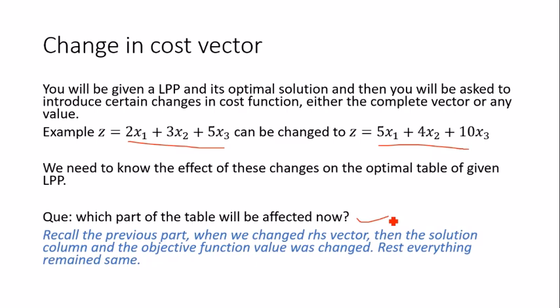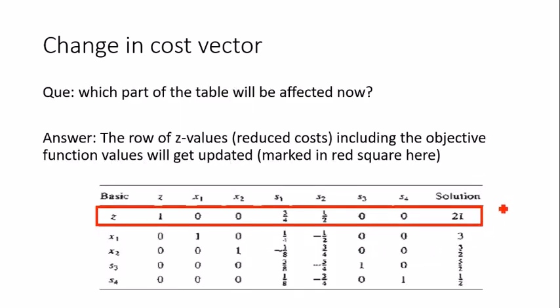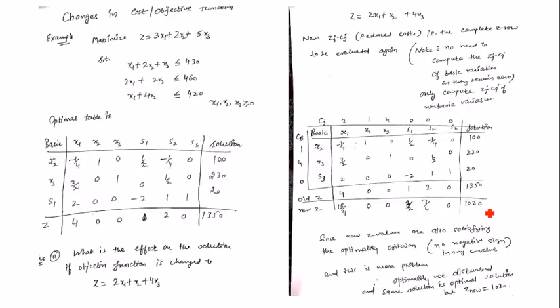Since optimality is affected, we need to connect this to the simplex table. In the optimal table, the z-row contains the net evaluations (reduced costs) of all variables, and this is where optimality is decided. When we introduce a change in cost, the reduced costs will be affected and must be recomputed.